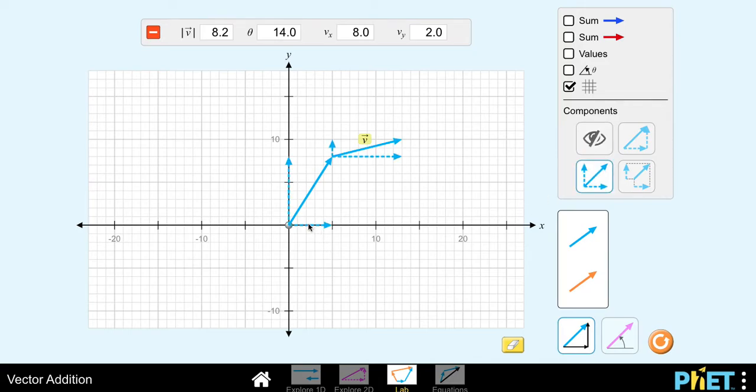And if I see this, I see that this value right here is the x component of vector 1 and this y component is the y component for vector 1 as well. And for this vector, here's the x component and here's the y component.